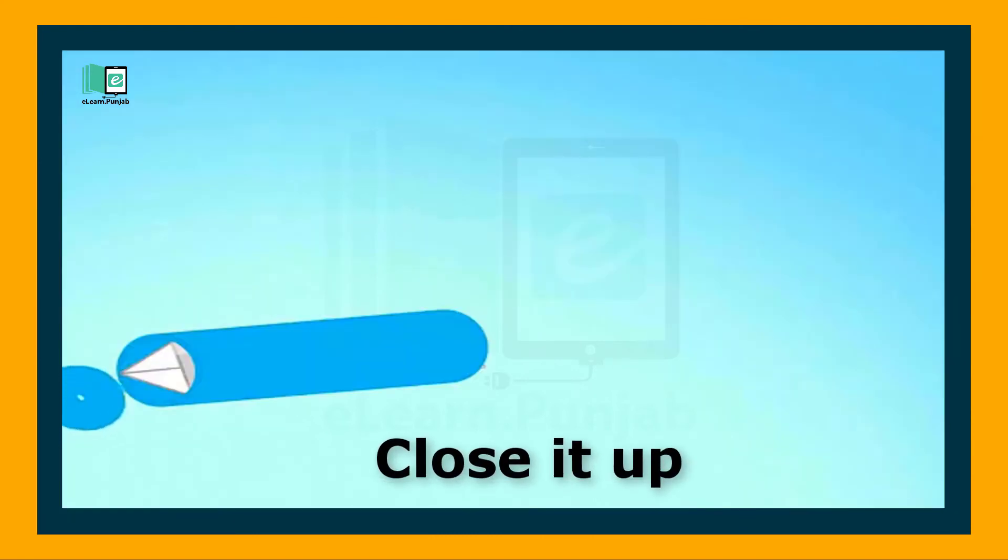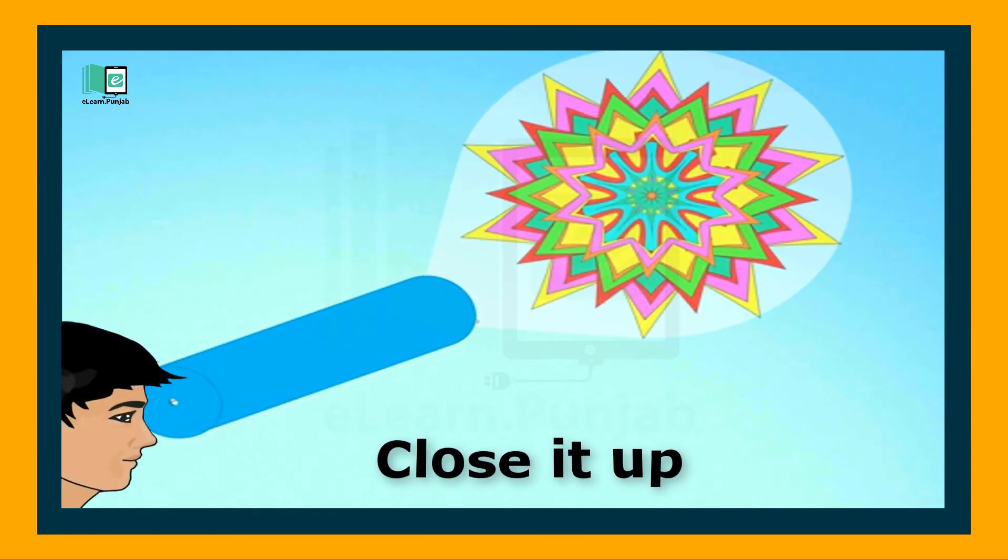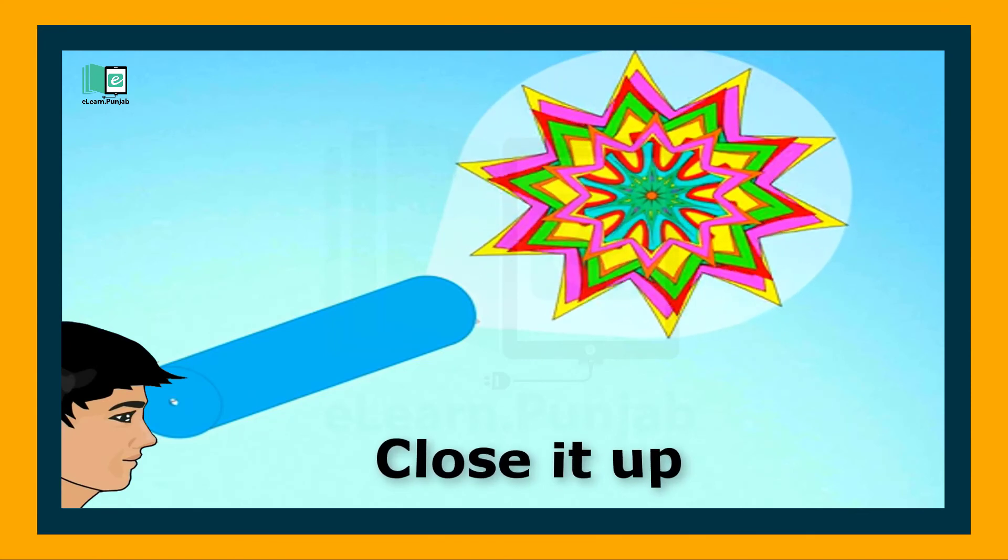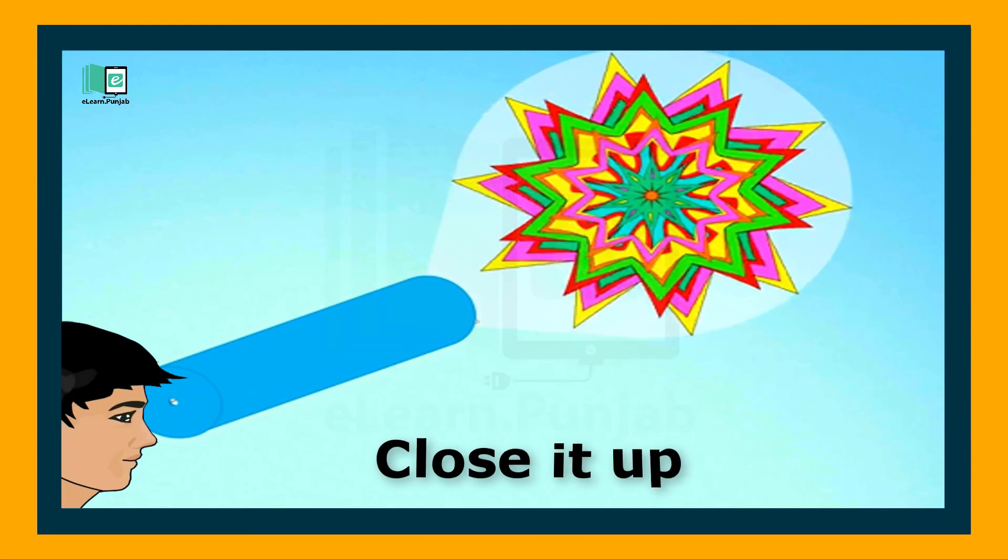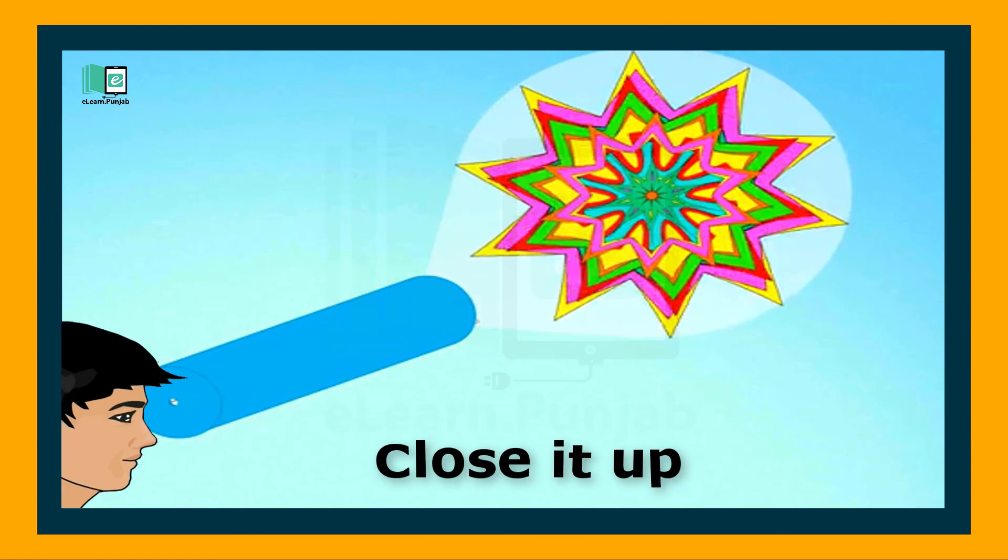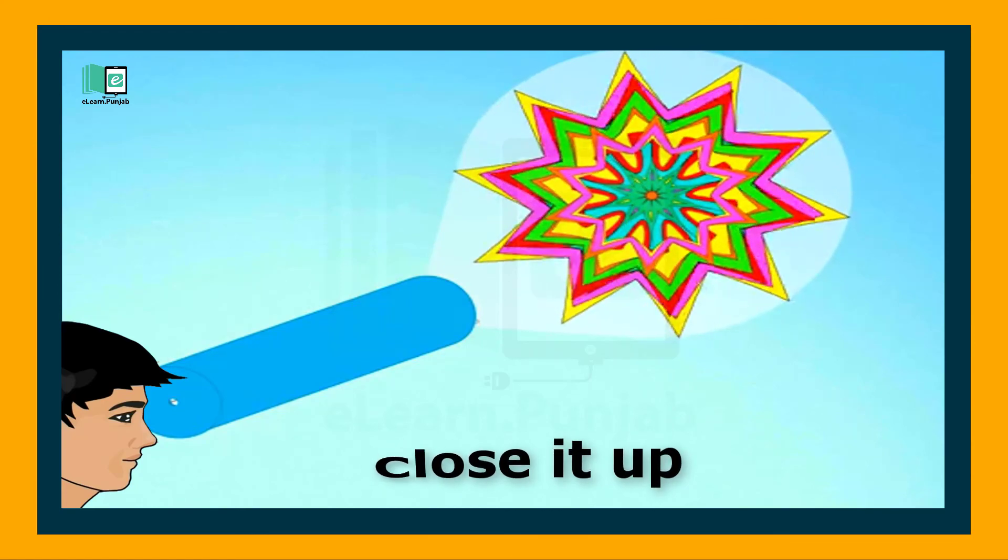Close it up, and you can see different colors and different patterns with your eye. This end of the kaleidoscope is closed off with transparent glass or plastic, which not only keeps the objects in place, but also lets light through to reflect the images.